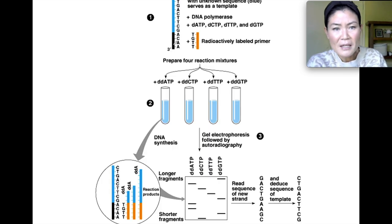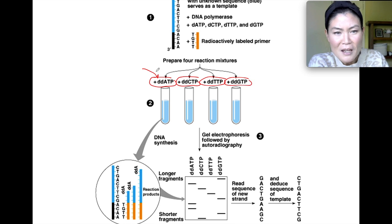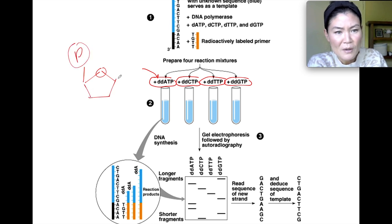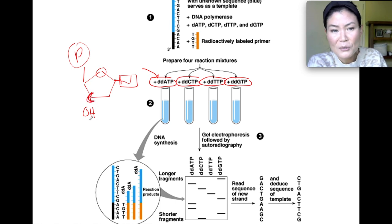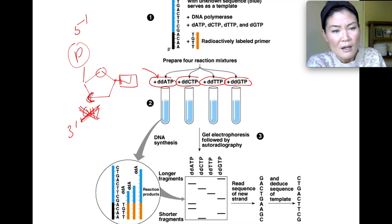These nucleotides are missing the hydroxyl group attached to carbon number three. Because of this, they're unable to form a bond with another nucleotide. You know how DNA polymerase can only add to the three-prime end — these dideoxynucleotides are missing that OH functional group at carbon number three. When this nucleotide is added to a growing DNA strand, it stops — there's no elongation, the DNA strand doesn't get any longer.